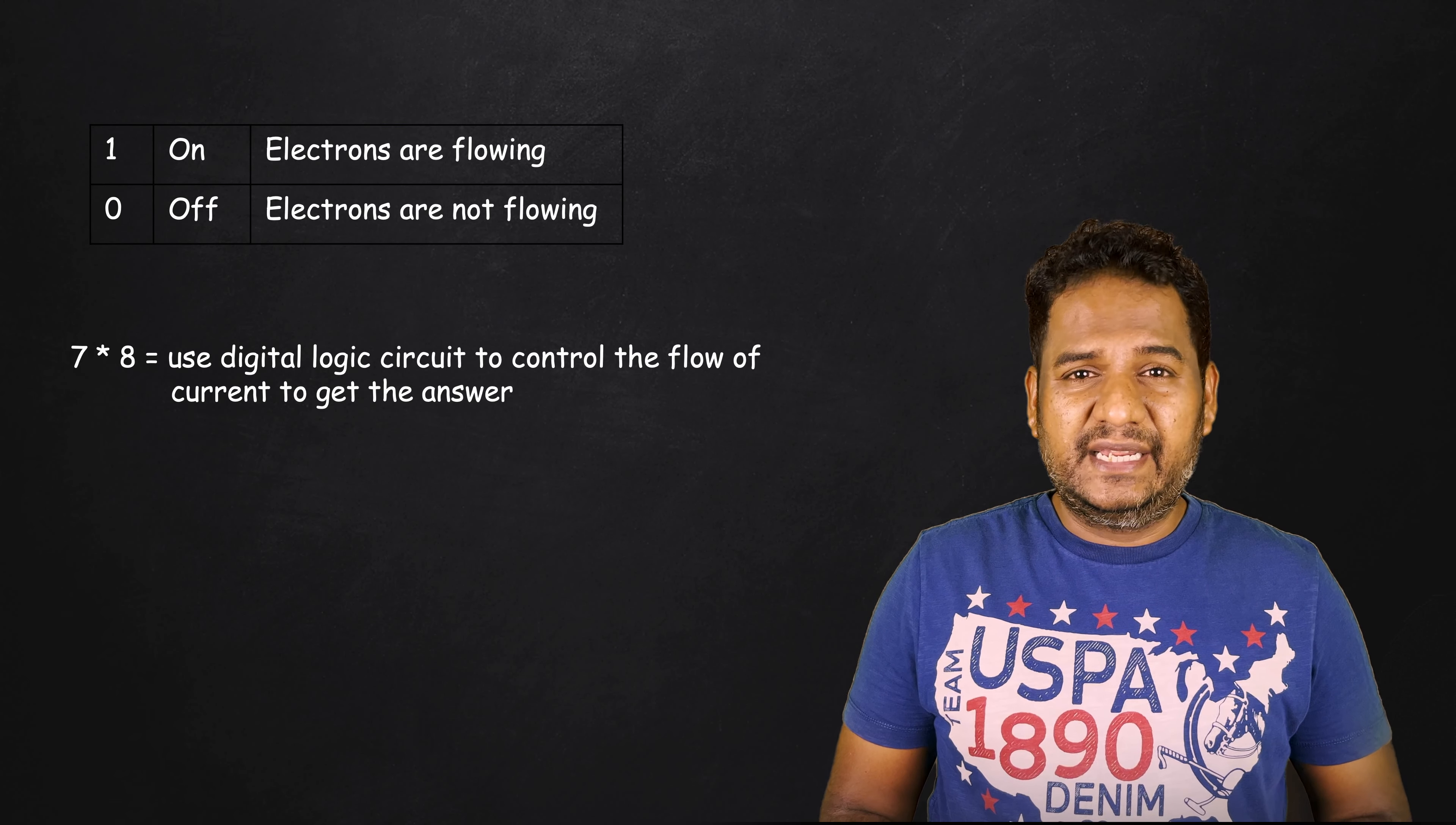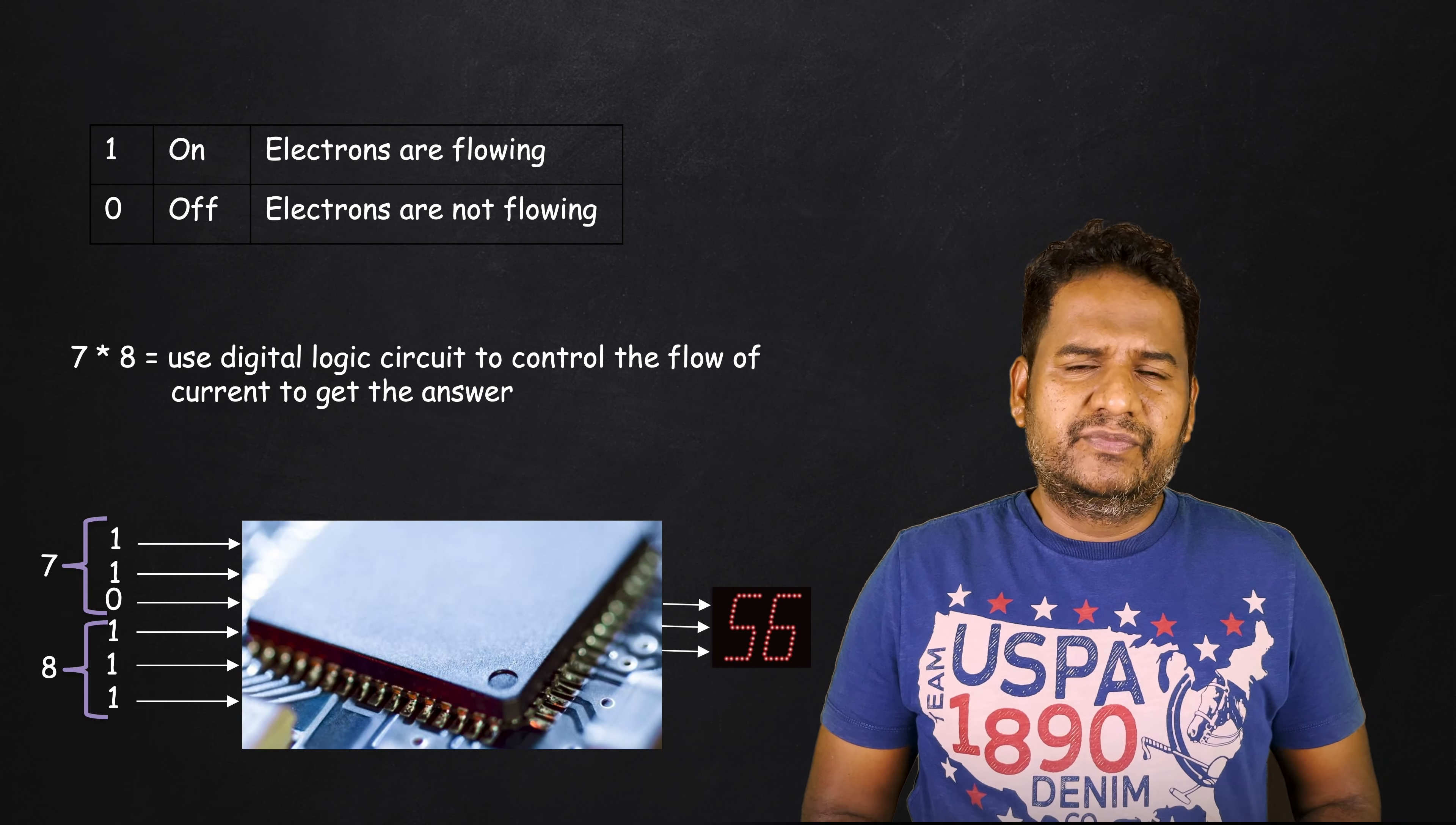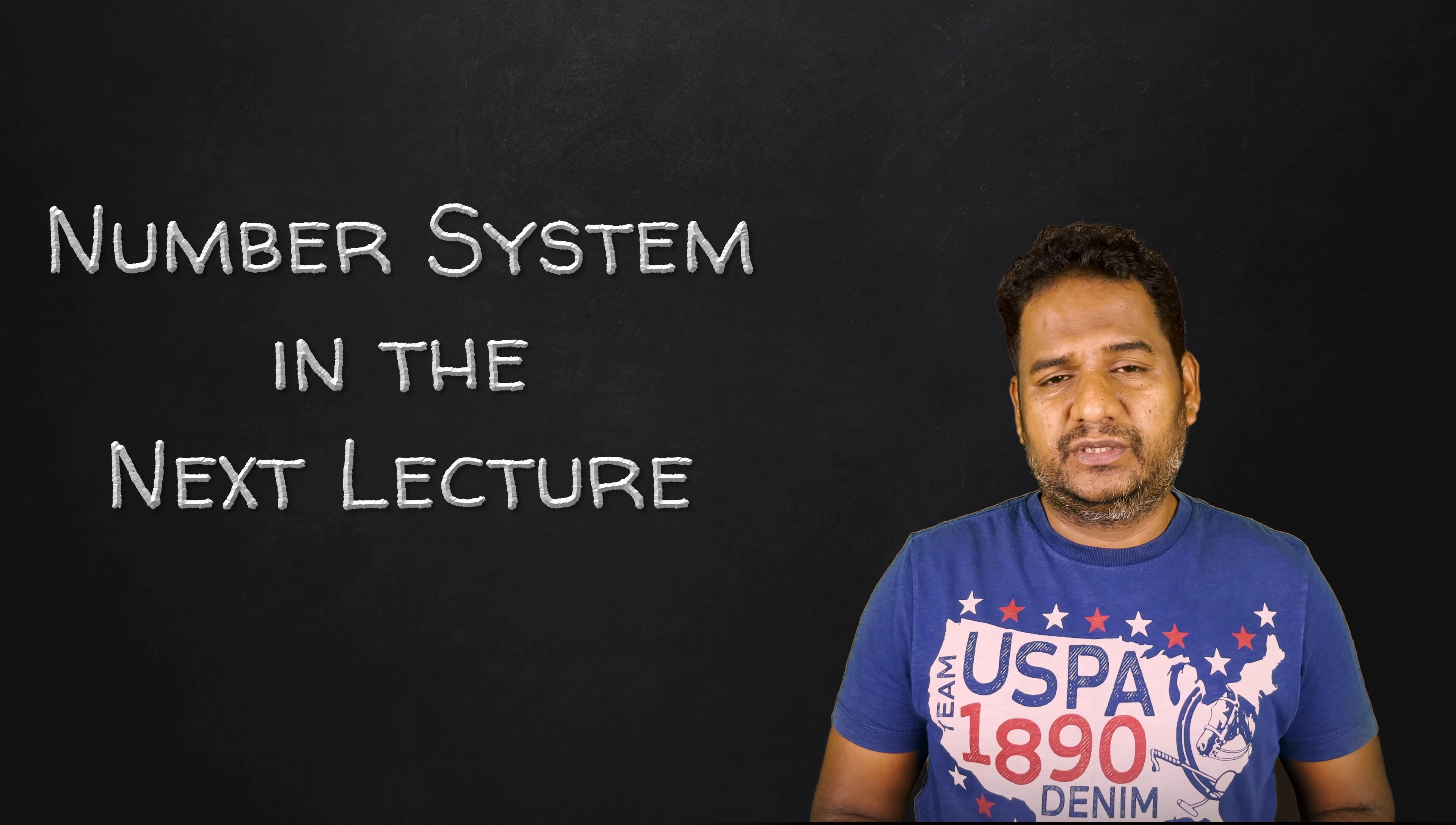However, how do we provide input such as 7 and 8 to a circuit built using transistors? Simple. We can use on and off states to provide input to the circuit. In other words, we can provide a number as input using specific sequences of electric current. Then the circuit can perform the calculation and output the result by lighting bulbs in a certain sequence. If you do not understand, it is completely fine. We need to first understand the number system, which will help us find a way to represent any decimal number as a series of on and off states. In the next lecture, we will learn the number system, how to represent positive and negative numbers, and solve related questions asked in previous year GATE exams.